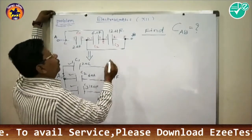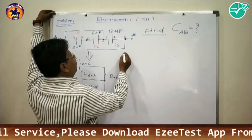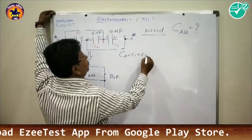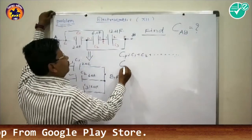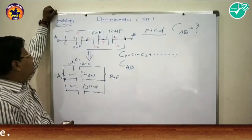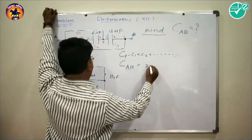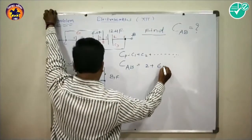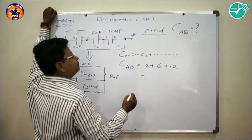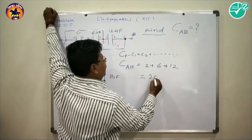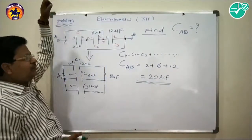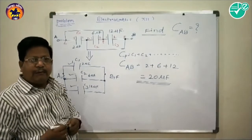For a parallel combination, Cp = C1 + C2 + C3. Therefore, the equivalent capacitance between A and B is 2 + 6 + 12 = 20 microfarads.